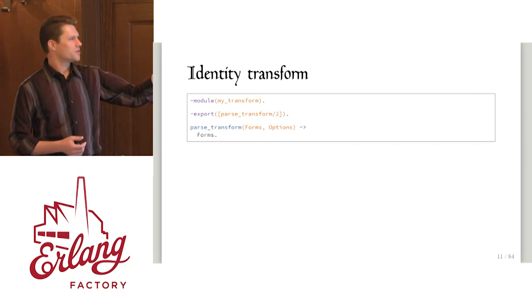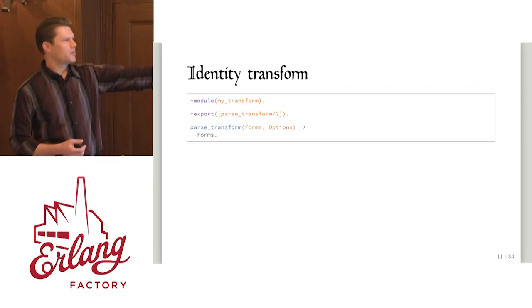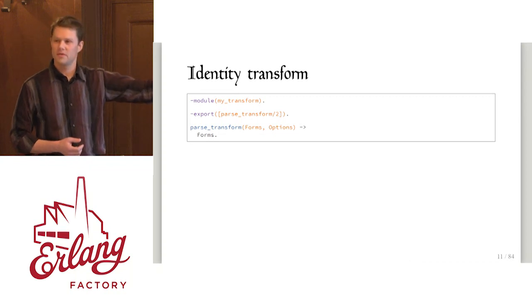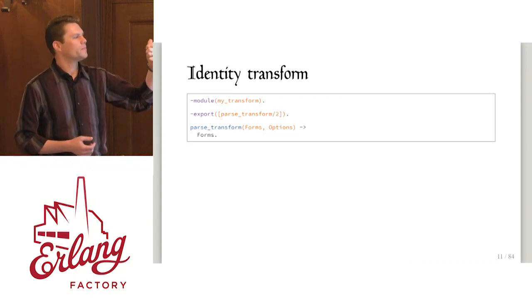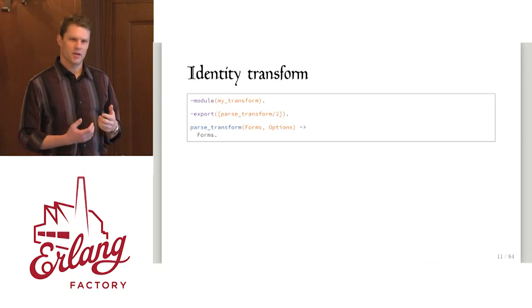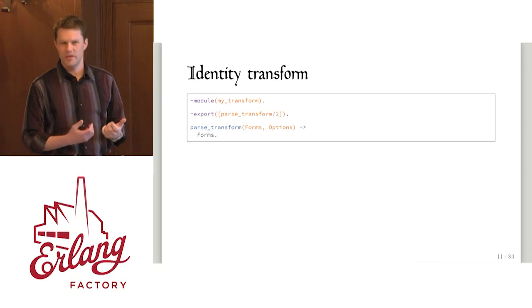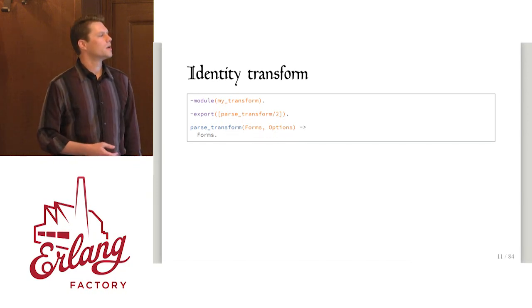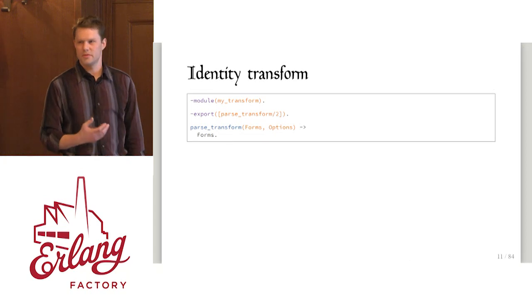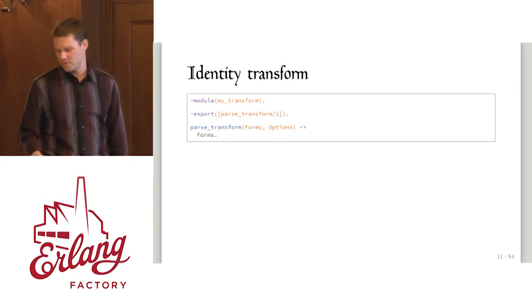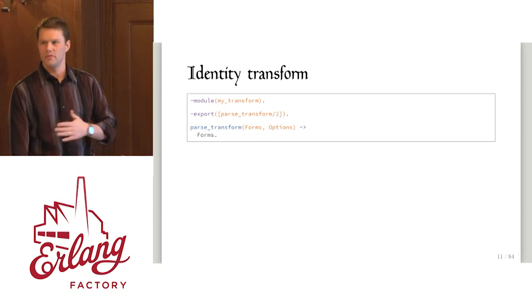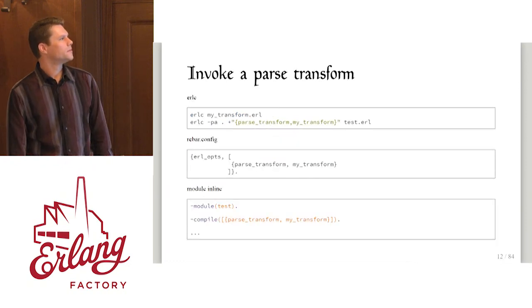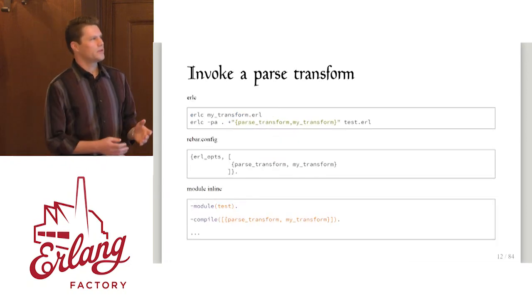We have forms — that's the abstract syntax tree. The way the compiler gives it to us is not really a tree, it's actually a list of trees, just because of the way the module format works. Options is a compiler option, so you have access to all the options your user passed to the compiler. If we're going to invoke one of these — run this parse transform in our code — we first have to compile it, it has to be executable, and you need to have it on your Erlang path.